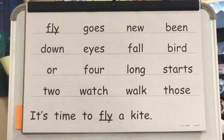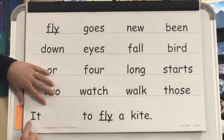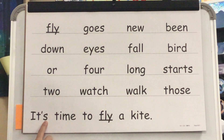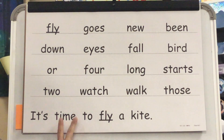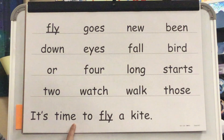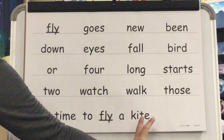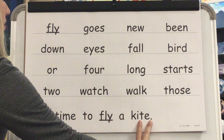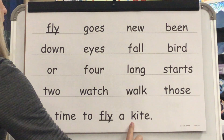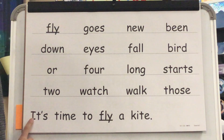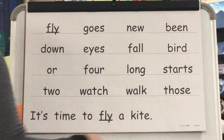Well, let's read our sentence. Word? It. Sounds: S. Contraction? It's. Sound: I. Blend: T. I'm. Word? Time. It's time. Word? To. It's time to. Word? Fly. Word? A. It's time to fly a. Sound: I. Blend: K. I. T. Word? Kite. It's time to fly a kite. Your turn. It's time to fly a kite. Great job.